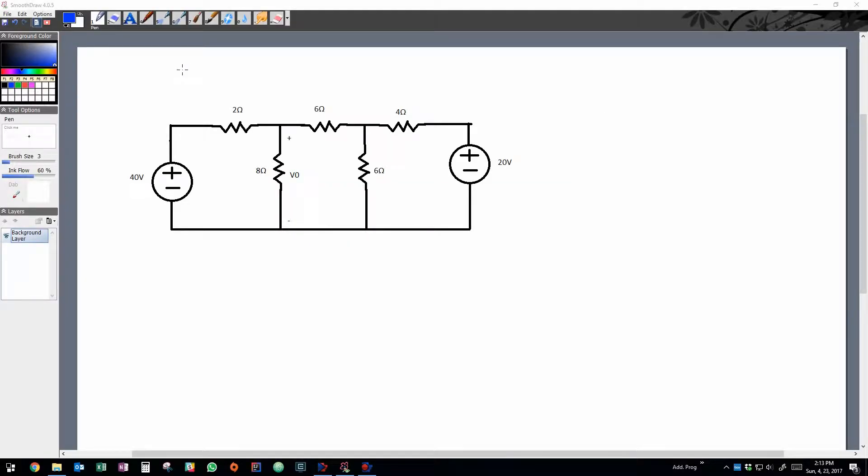What's up guys, so today we're going to go over mesh current analysis. Mesh current analysis is pretty straightforward whenever you have a circuit that has parallel branches and you have loops in the circuit, or just contained areas of the circuit. You can use this method and basically you go around the loop and you add up all the voltages and set it equal to zero.